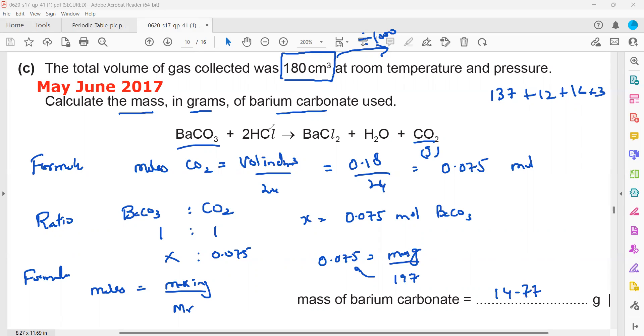Barium is 137, carbon is 12, and oxygen is 16, so this will be 48 plus 12 equals 60, and 60 plus 137 equals 197. Then 197 into 0.075 gives us 14.77 grams. You can see how we solve this: formula, ratio, formula. First we got the moles of carbon dioxide, from moles of carbon dioxide we got moles of barium carbonate, and from moles of barium carbonate we got the mass of barium carbonate.